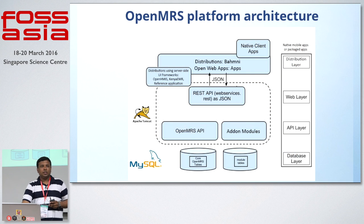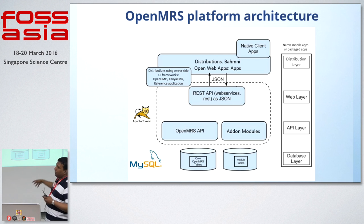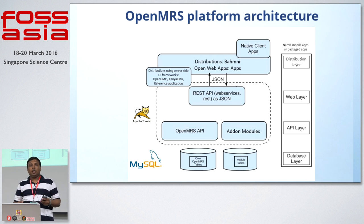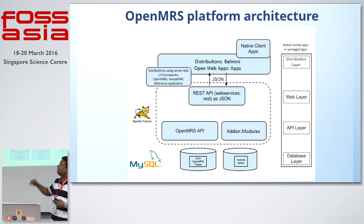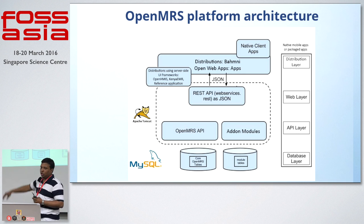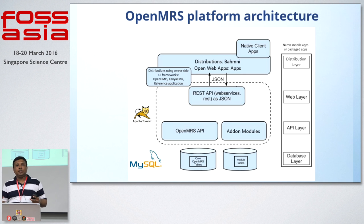This is our architecture. What you see in the dotted box is our core platform — what we work on in those 117 repositories. There's also another distribution called the reference application shown on the top left, which is another product we build.